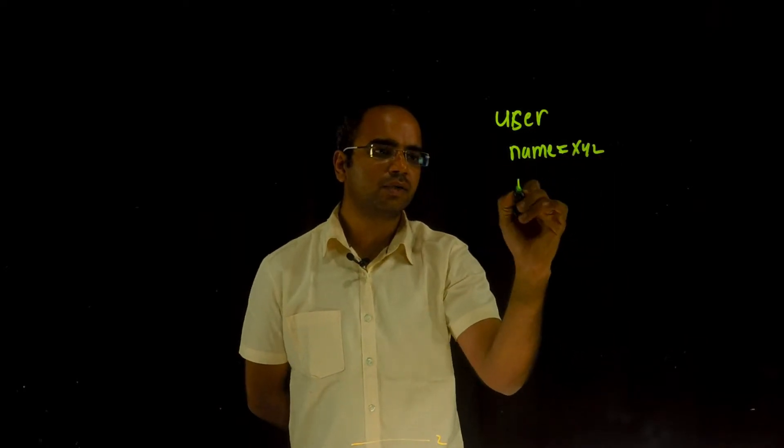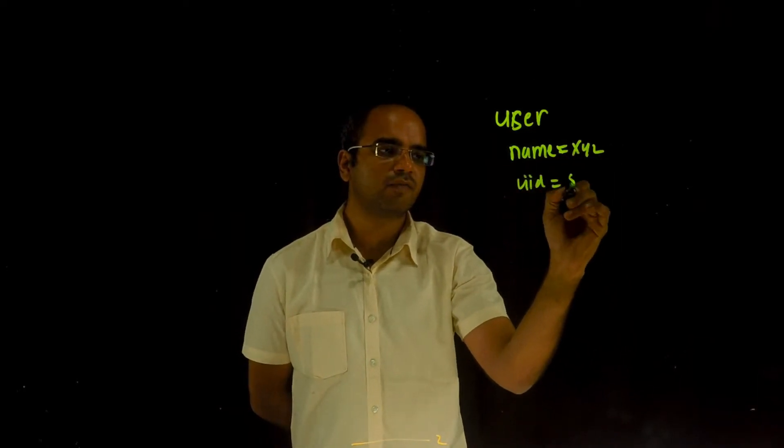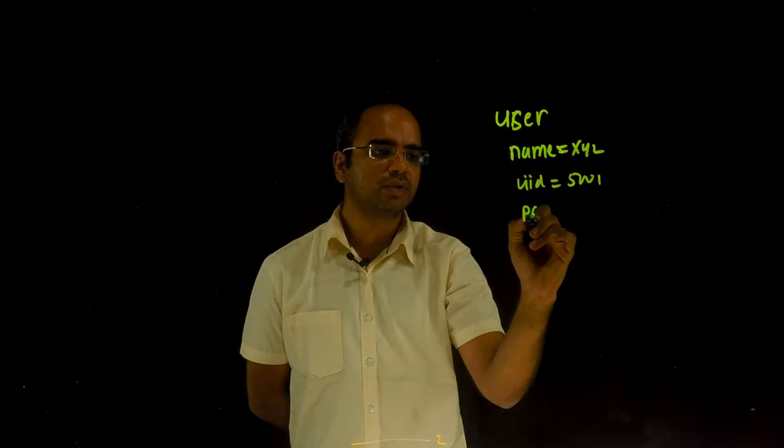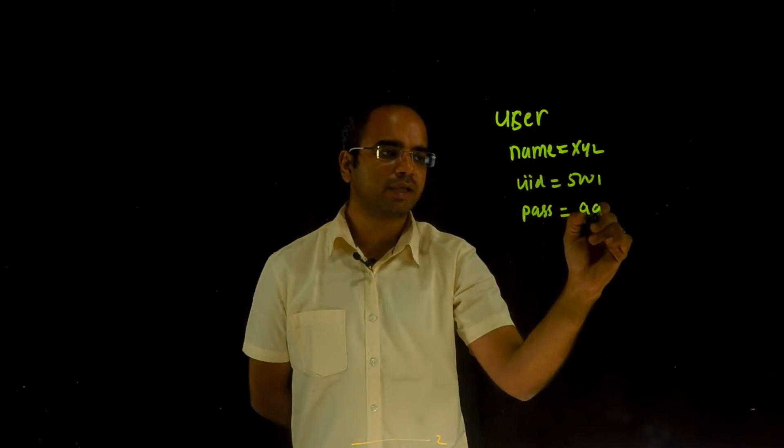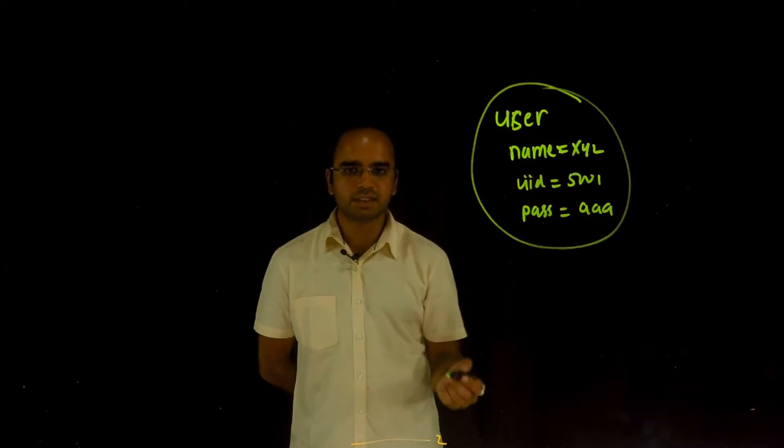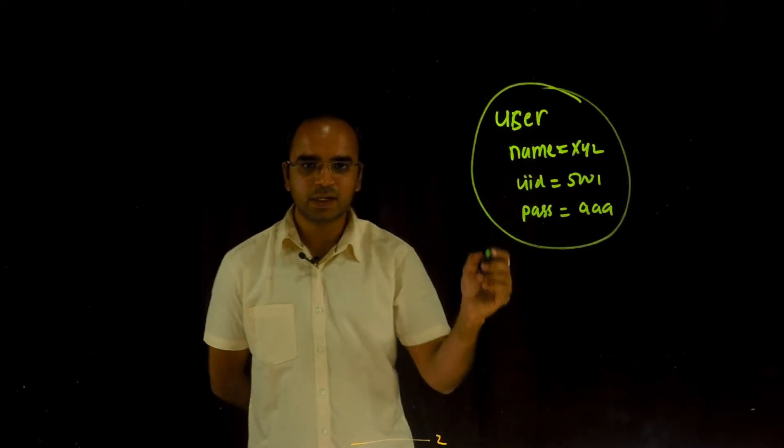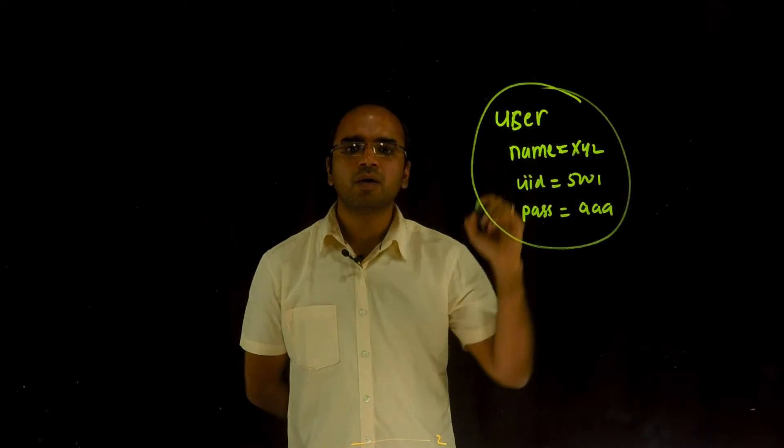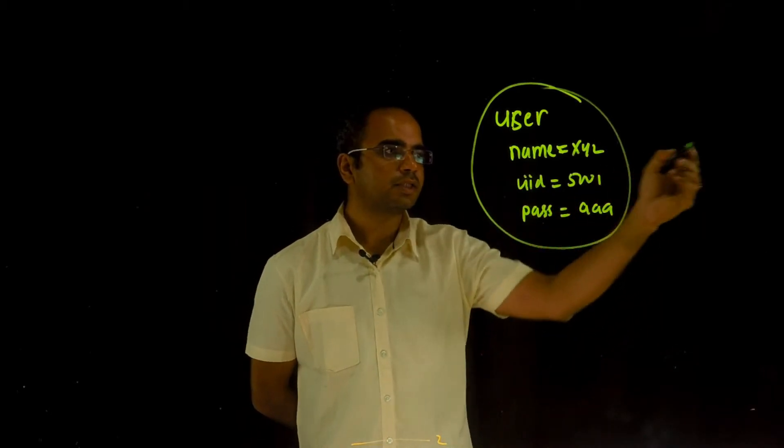whose UID is 5001, whose password is AAA. That's a desired state. Now, how does the system achieve the desired state also depends on what is the current state on the system. For example,